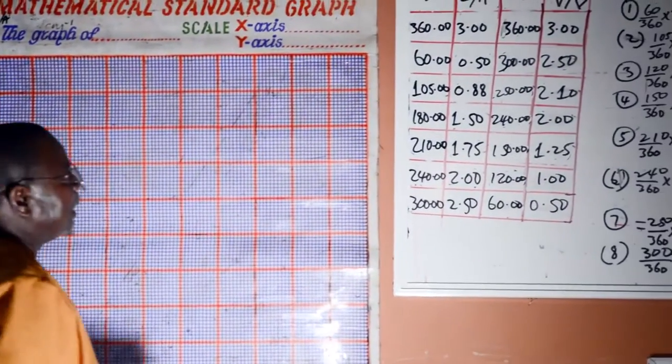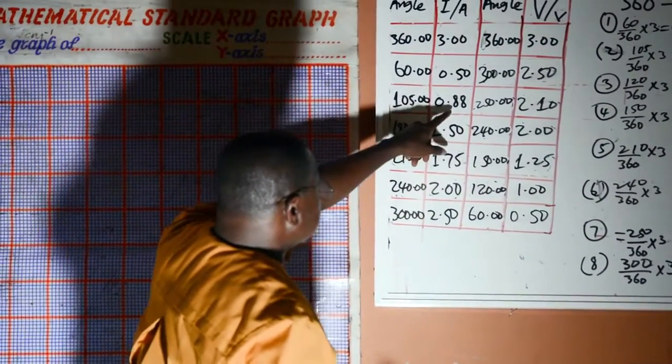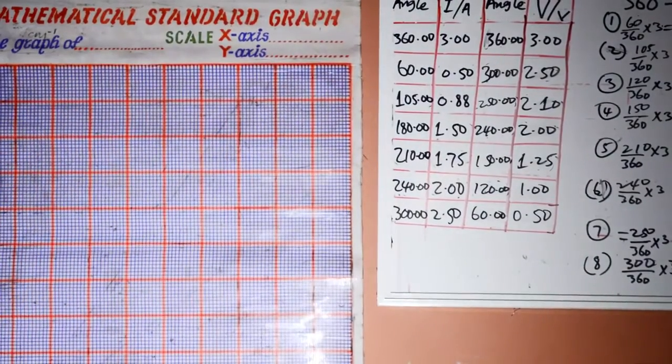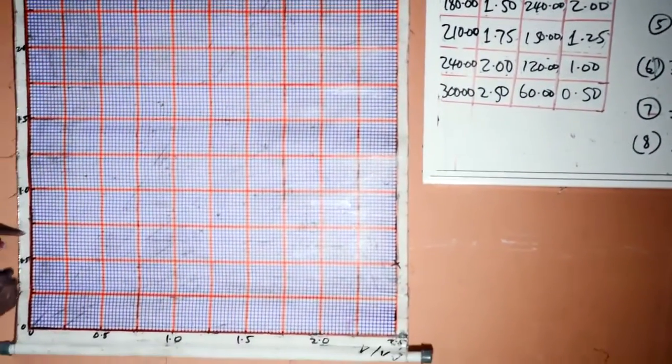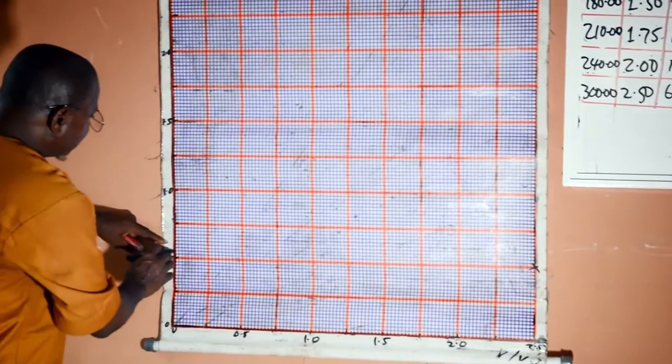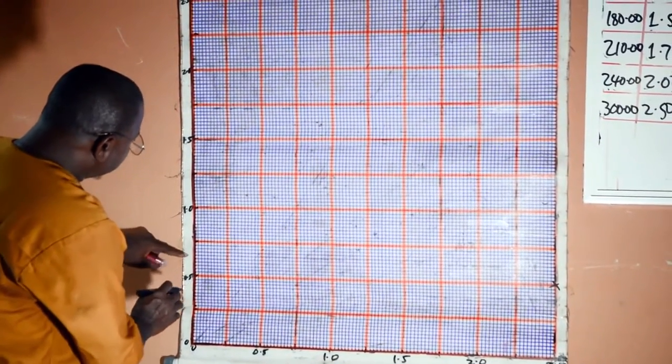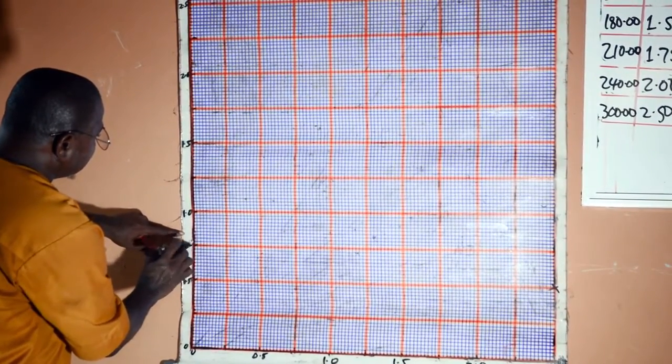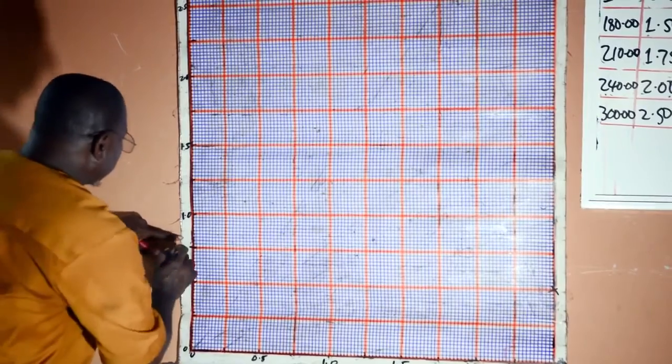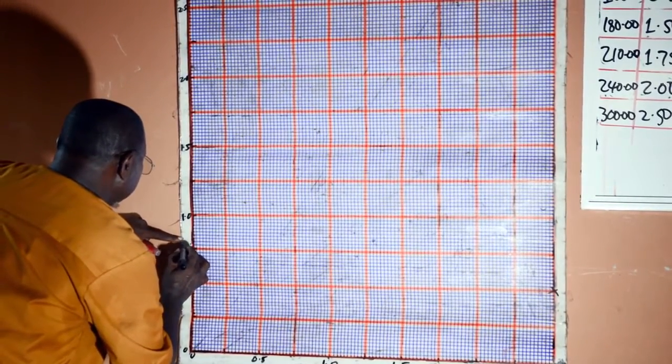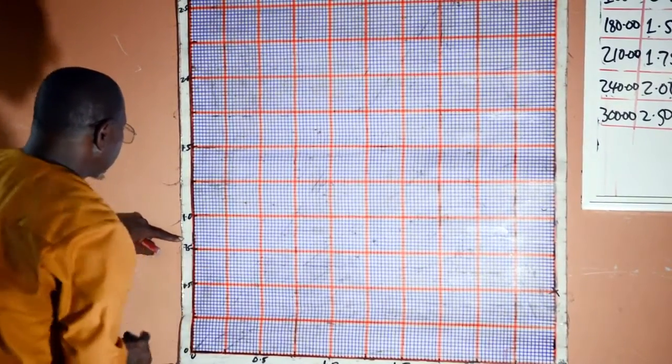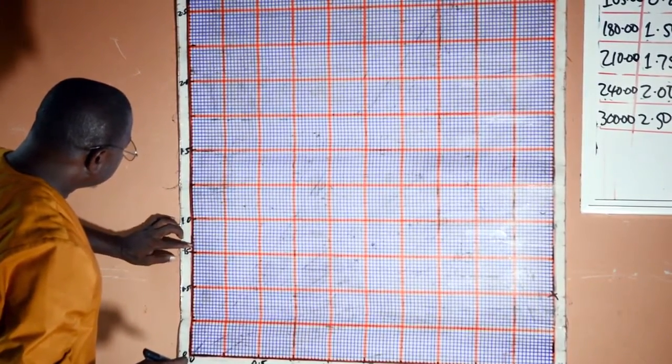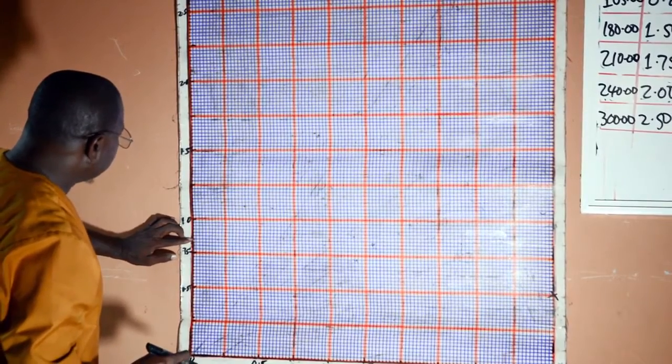When I is 0.88, V is 2.11. This is 0.5, 0.6, this is 0.75. 0.75 is here. 0.8 will be here. 0.88 will be somewhere here.